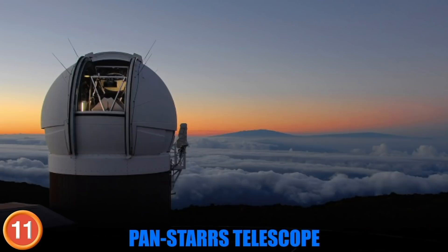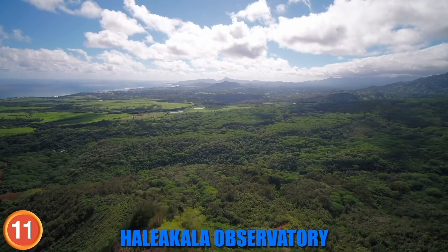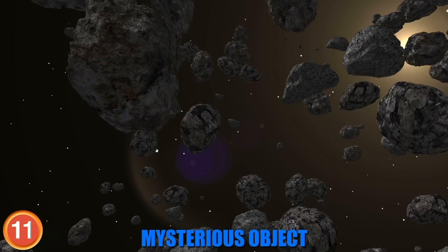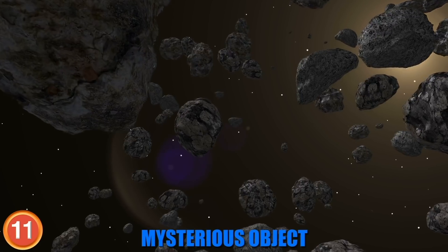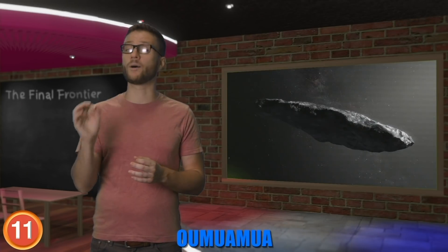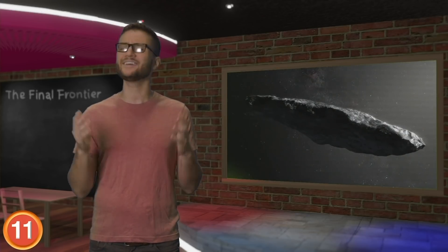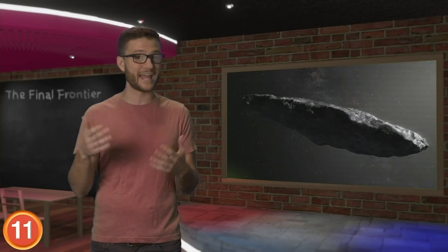Number 11. Back in 2017, the Pan-STARRS telescope located at the Haleakala Observatory in Hawaii spotted a mysterious object floating through our solar system. Scientists named the traveling enigma Oumuamua because astronomers just really want to make space as inaccessible as possible to the average person.